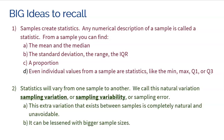Now, the second big idea is that statistics will vary from one sample to another. We call this natural variation sampling variation or sampling variability, or you might even hear some people call it sampling error. This extra variation that exists between samples is completely natural and unavoidable.